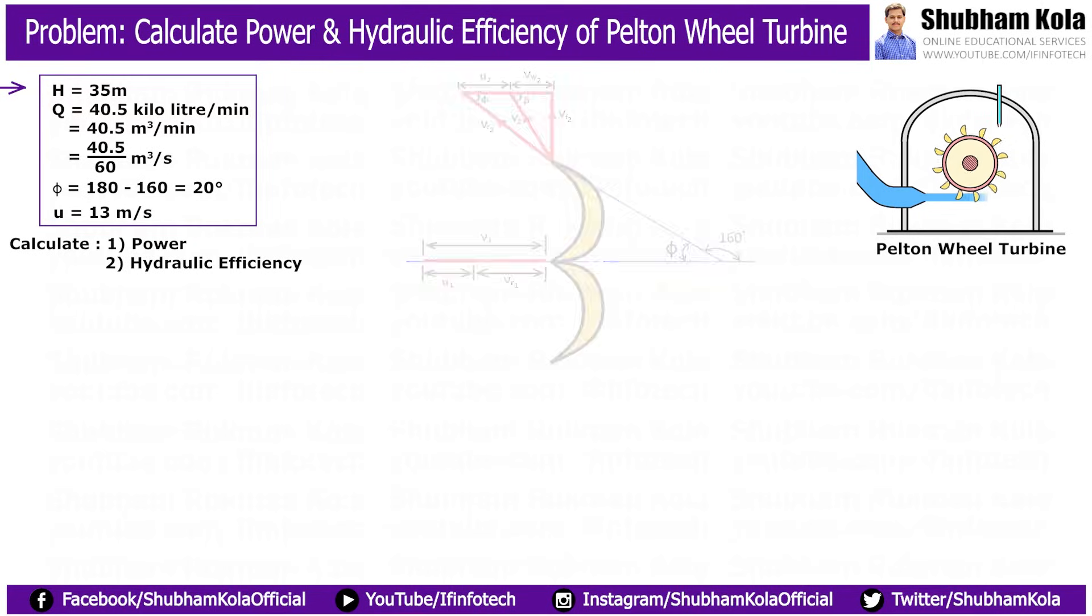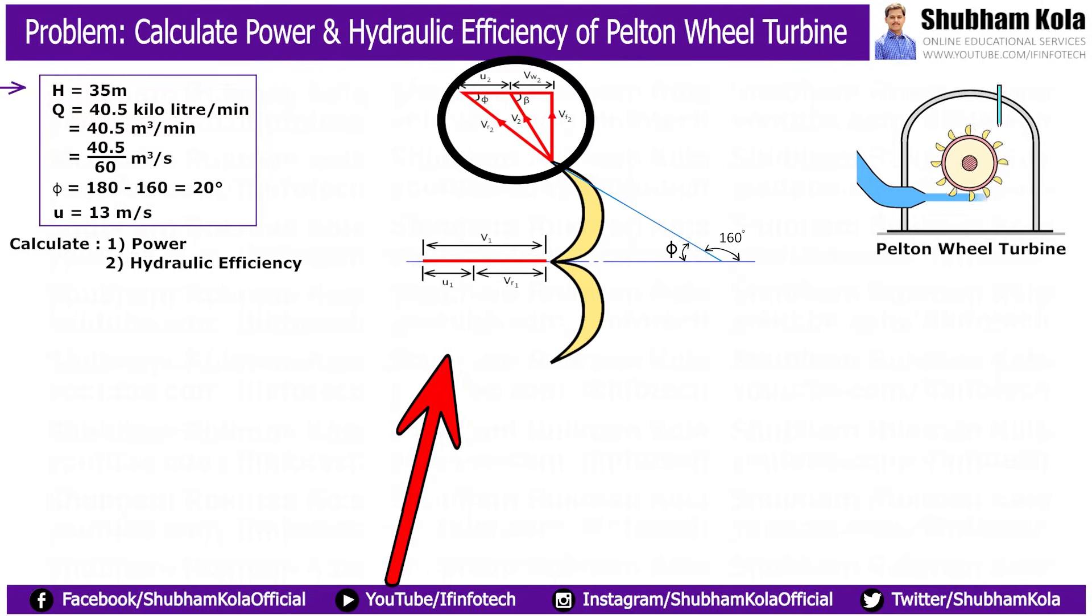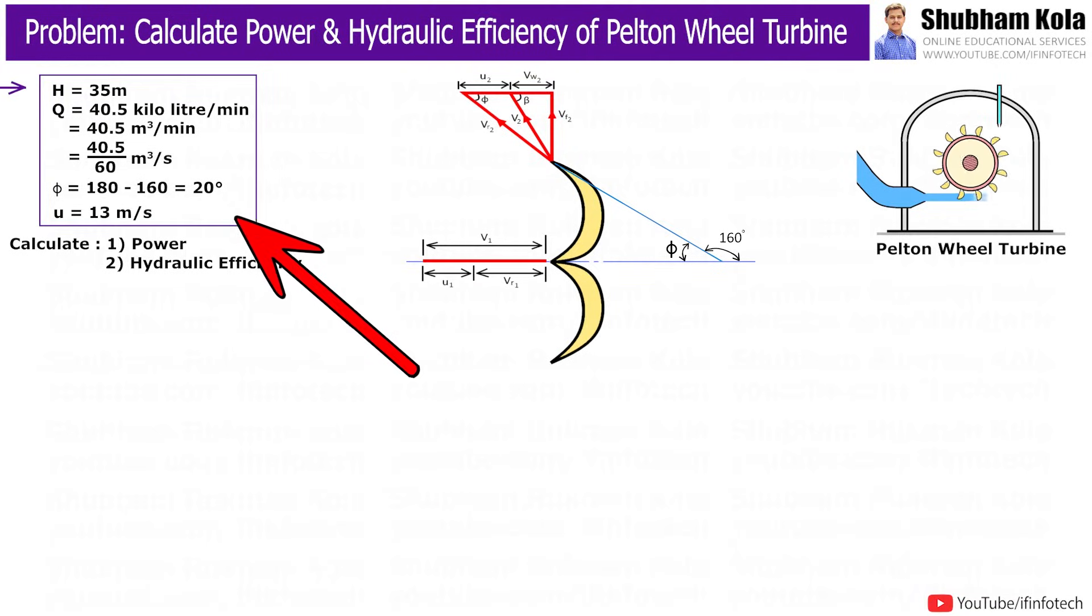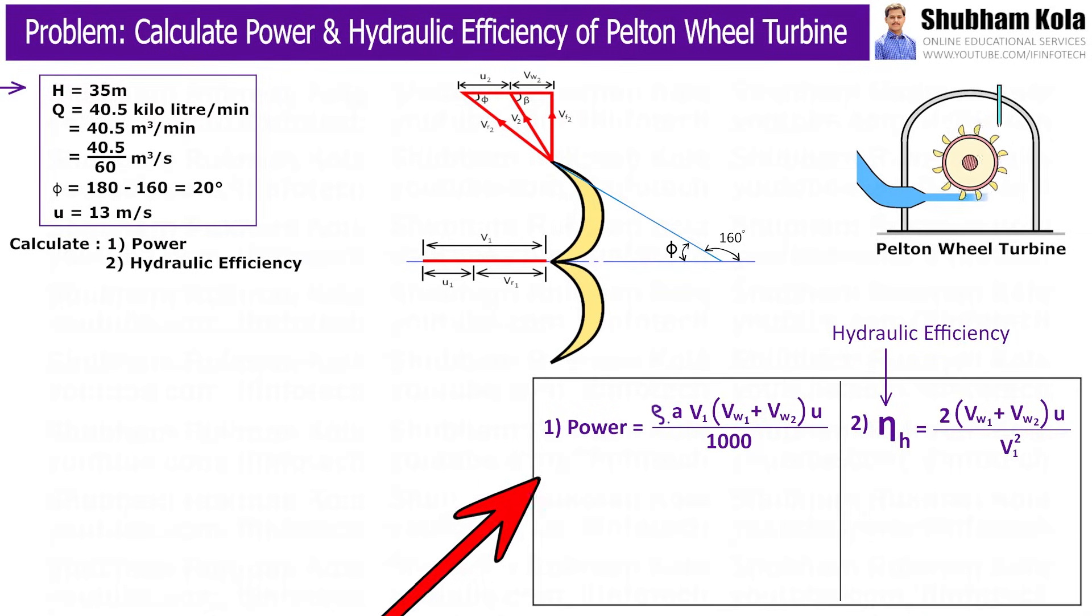Before going to solve this numerical, first I'll draw inlet and outlet velocity triangles of Pelton Wheel and I'll write given data provided. In this problem, first we need to calculate power of turbine. So, to calculate power, we want to find out values of velocities of wheel at inlet and outlet i.e. VW1 and VW2.